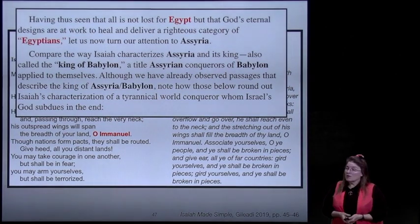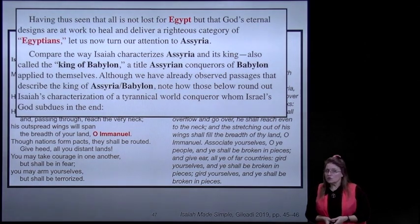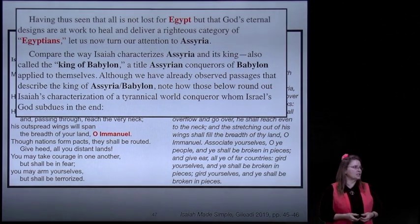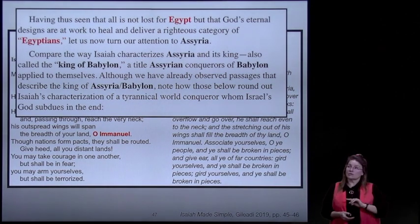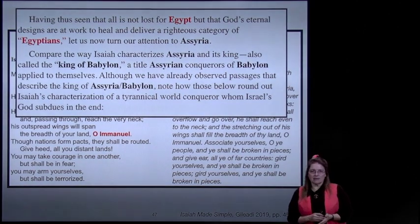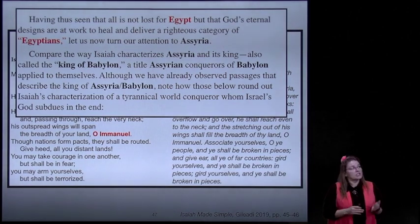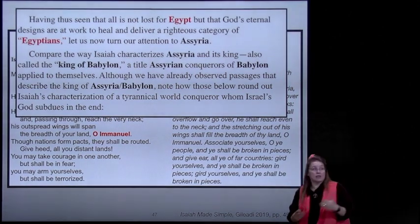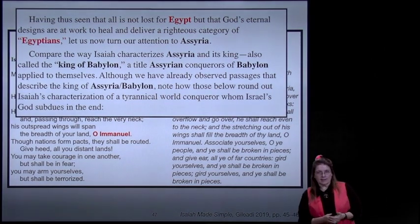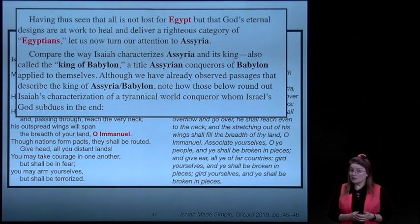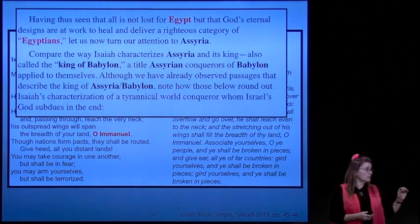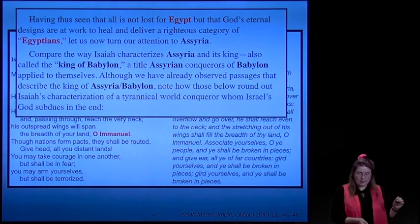Having seen that all is not lost for Egypt—but that God's eternal designs are at work to heal and deliver a righteous category of the Egyptians—now let us turn our attention to Assyria. Compare the way Isaiah characterizes Assyria, its king also called the king of Babylon, which historically was a title that Assyrian conquerors of Babylon applied to themselves.